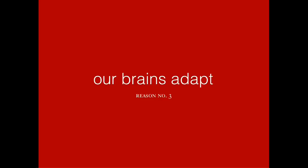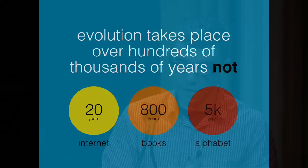What's happening is our brains are adapting. And I want to be clear that it's not evolution — evolution takes place over hundreds of thousands of years. It doesn't take place over 20 years with the internet, or 800 years with books, or even 5,000 years with the alphabet.